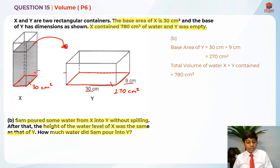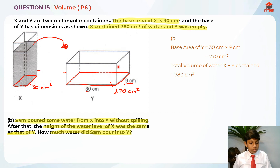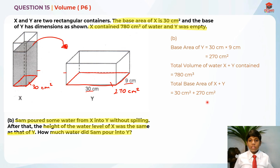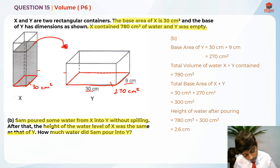To find the common height after pouring, since we know the combined volume, we divide by the combined base area. The total base area of X and Y is 30 cm² plus 270 cm² equals 300 cm². So the height after pouring is 780 cm³ divided by 300 cm², which gives 2.6 cm. Both containers have a water level of 2.6 cm after pouring.